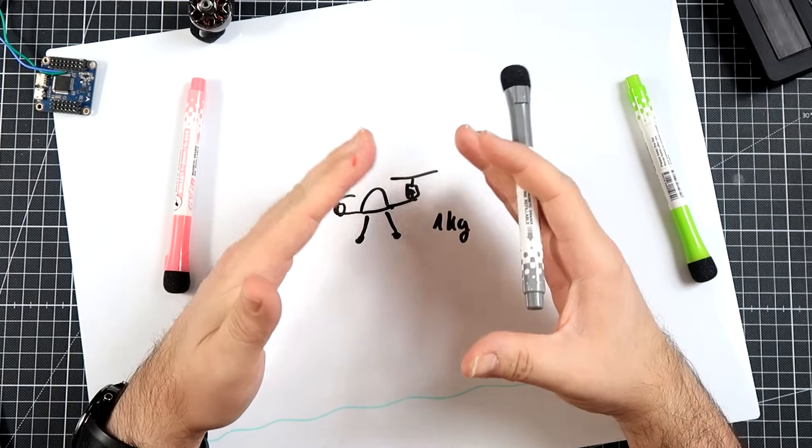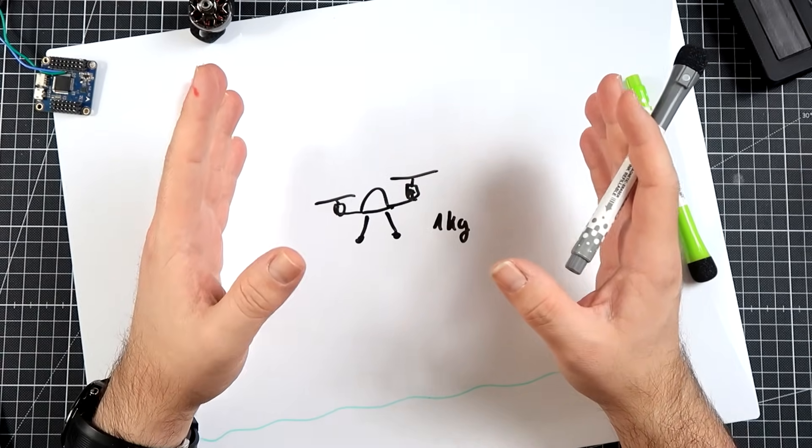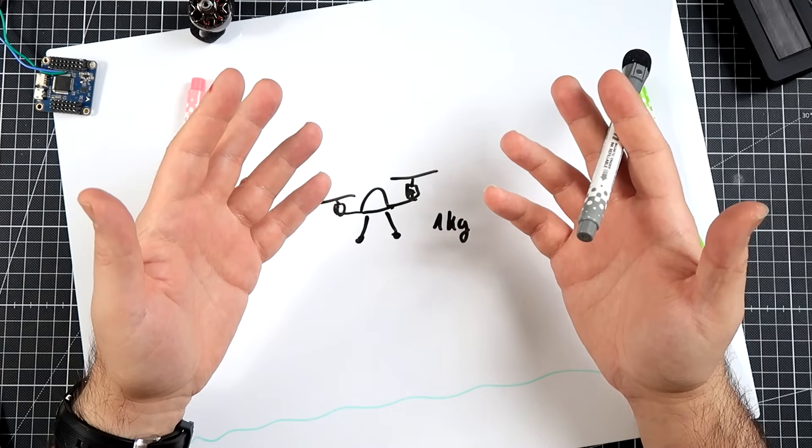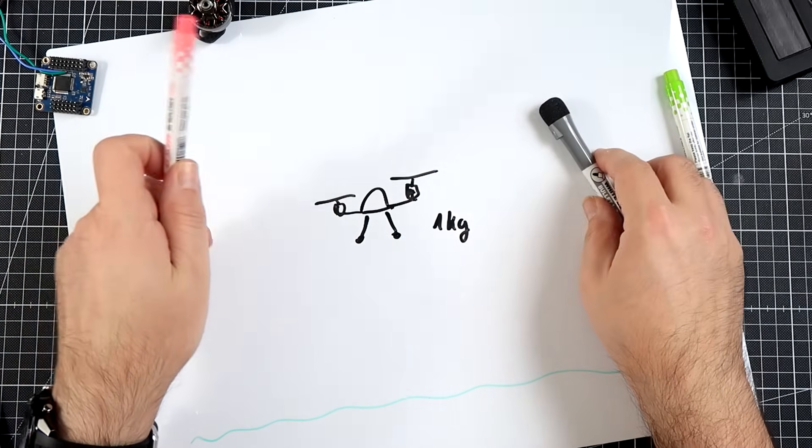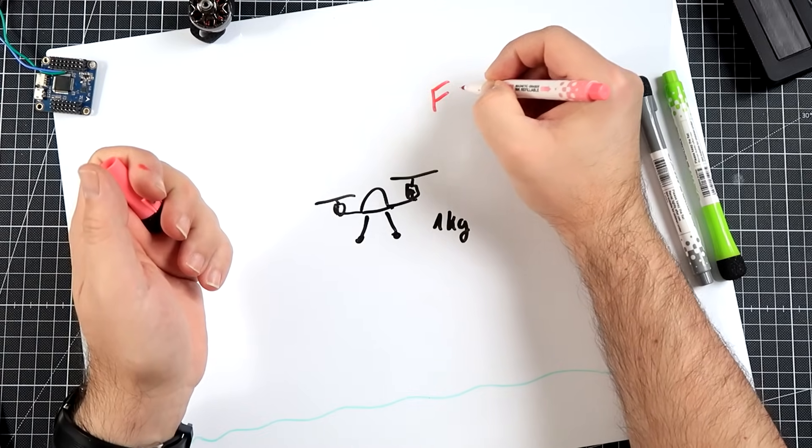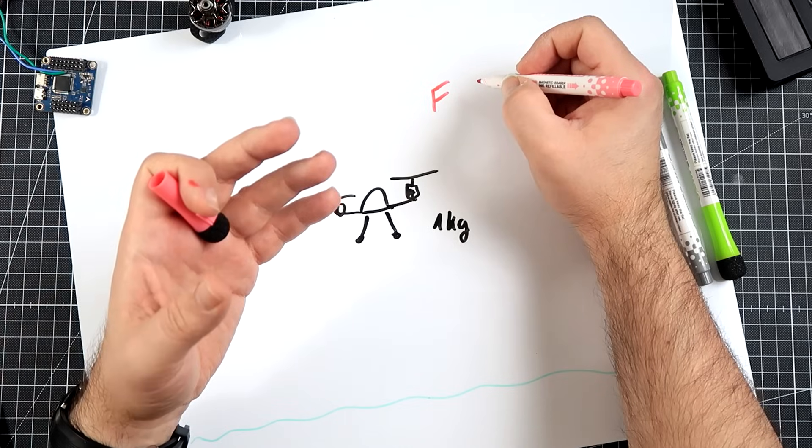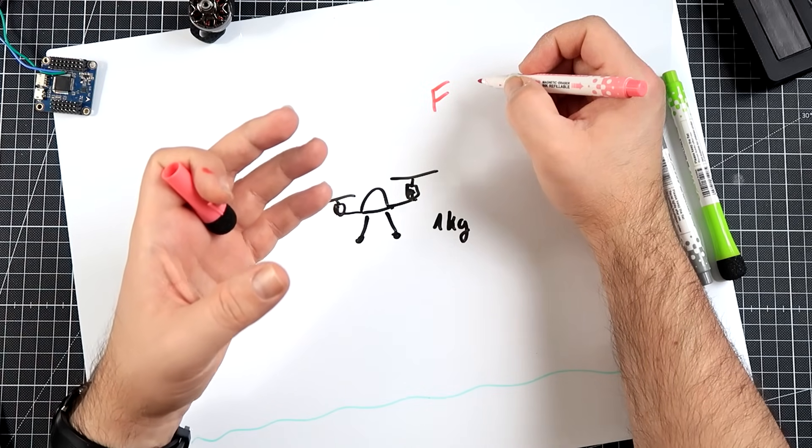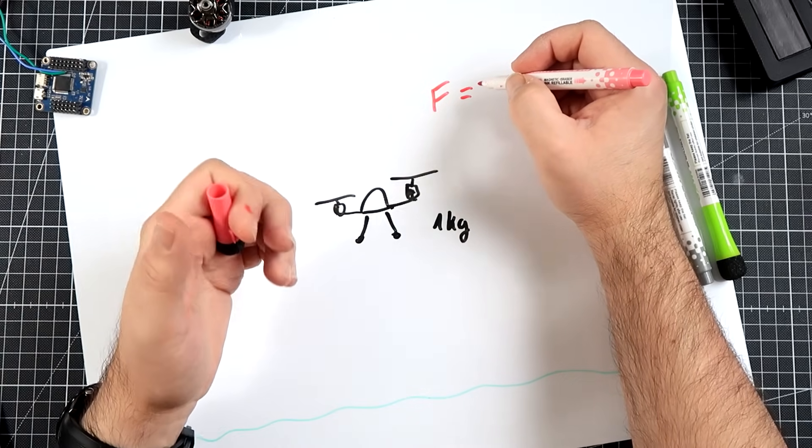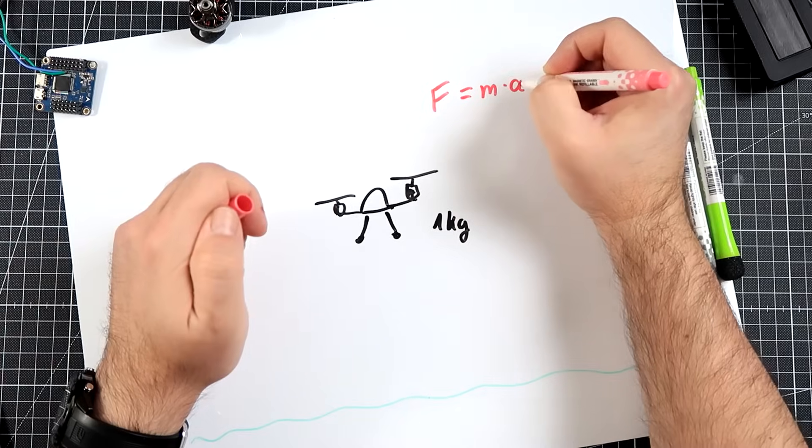We know it's a known fact, at least to everyone who does not believe in flat earth, that there is something called the force. Force is something that if not opposed causes the acceleration of the object. Thanks to Isaac Newton, we know that force equals mass times acceleration.